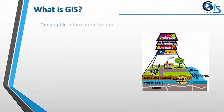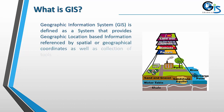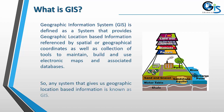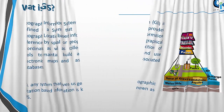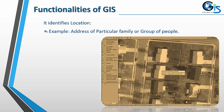What is GIS? A geographic information system is defined as a system that provides geographic location-based information referenced by spatial or geographic coordinates, as well as a collection of tools to maintain, build, and use electronic maps and associated databases. Any system that gives us geographic location-based information is known as GIS.